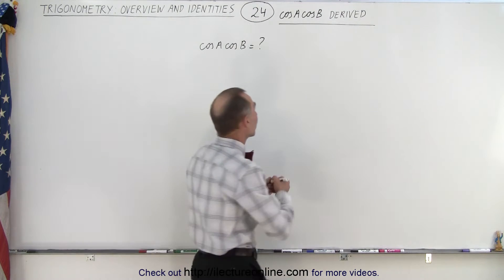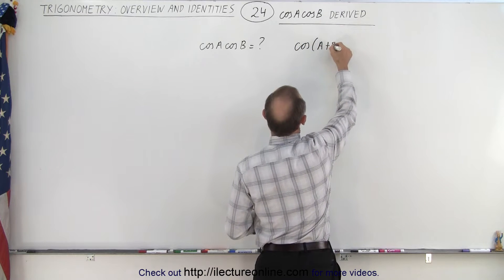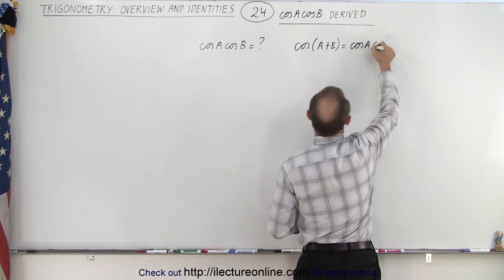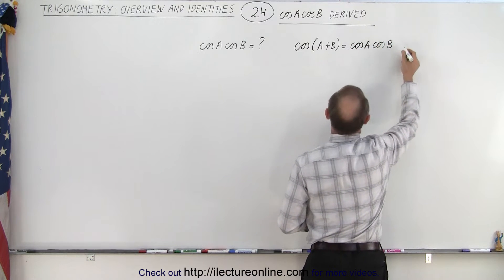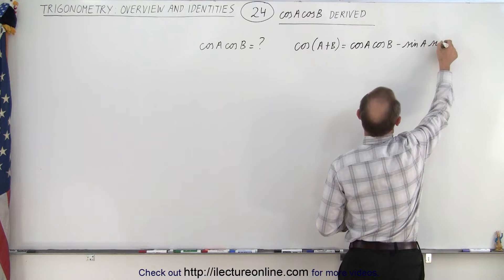What we're going to do is start with writing the cosine of A plus B, and that is equal to cosine A times cosine B minus sine A times sine B.